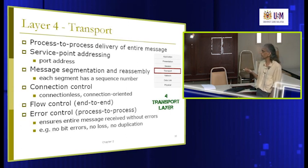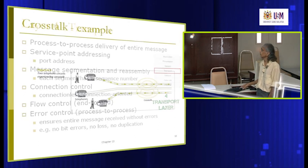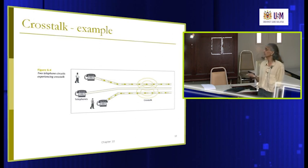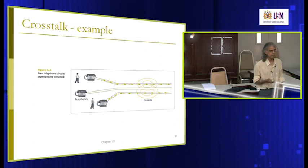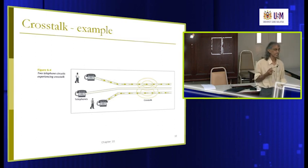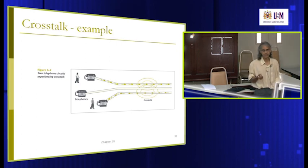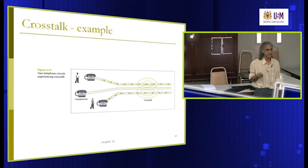Layer 4 handles flow control and error control end-to-end. Layer 3 is responsible machine-to-machine, while layer 4 is responsible from one application on a machine to another application on a different machine, because you can have multiple applications running on one machine. Layer 4 does this using port addresses — each service running on a server will have a separate port address.